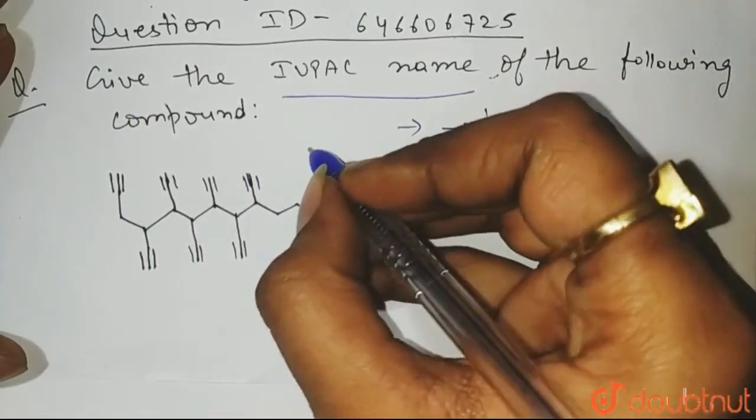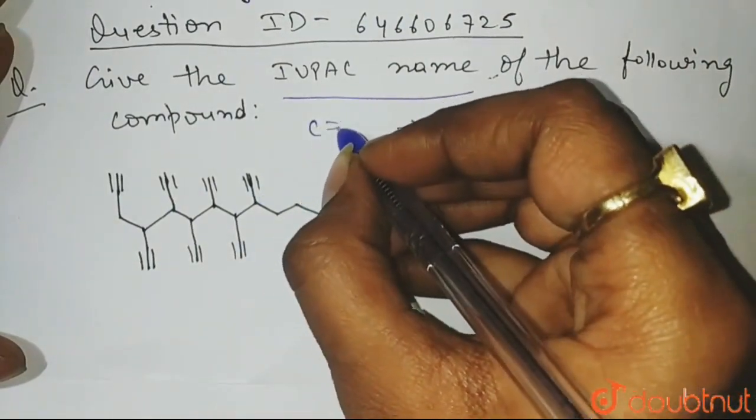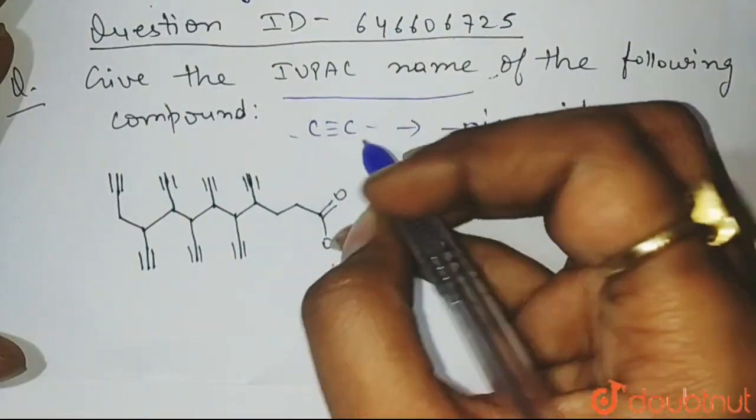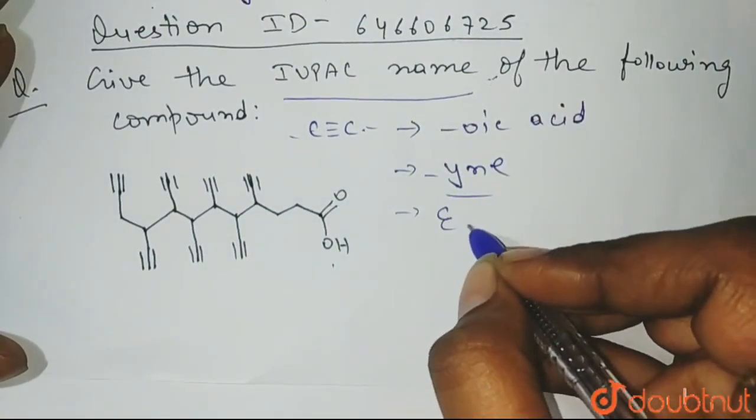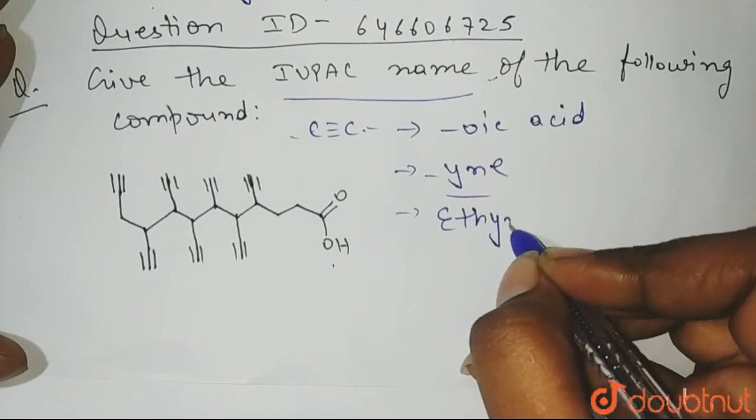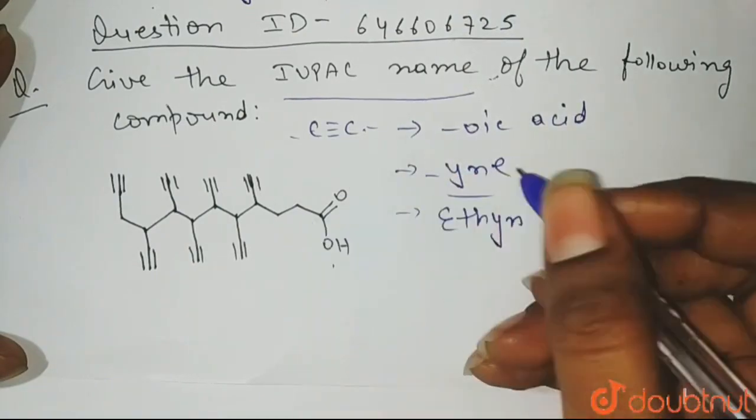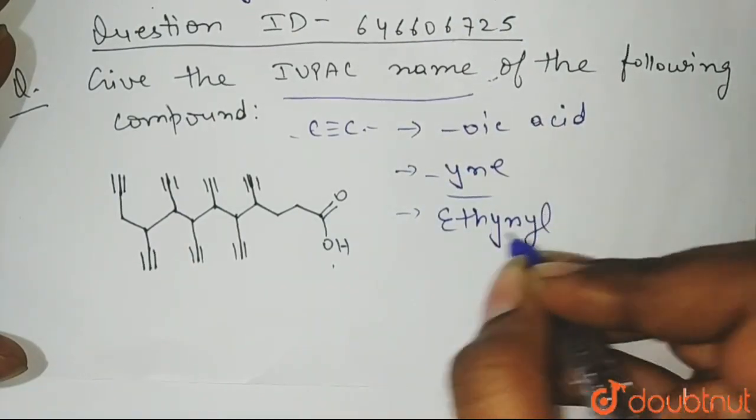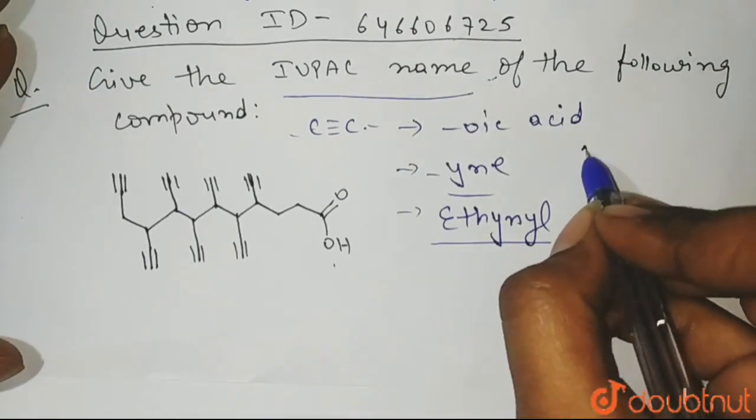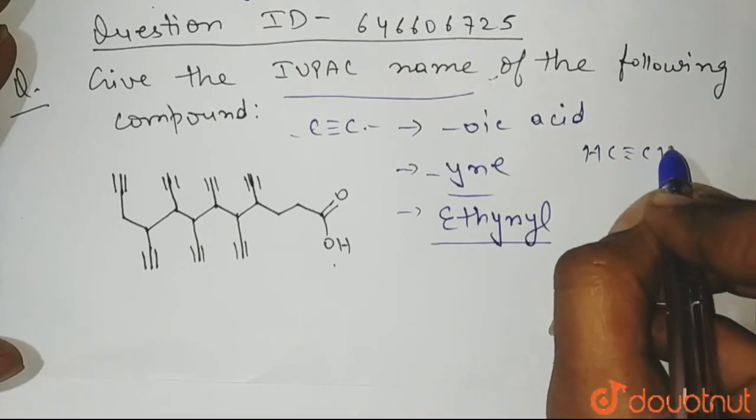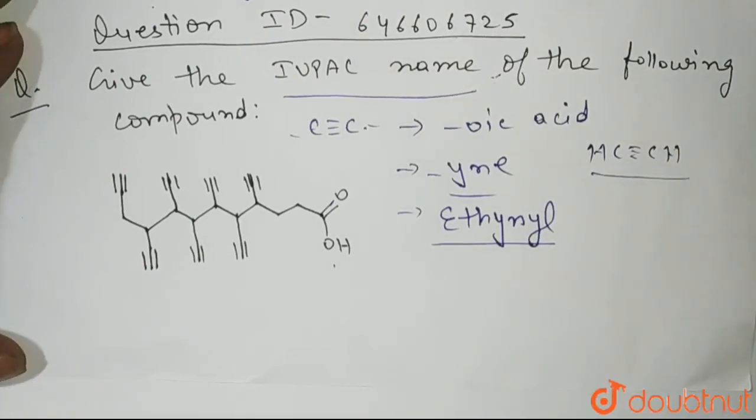Because if this, as you can see, this is present as a substituent, then because how many carbon atoms are there? One and two, two carbon atoms, so we will write ethyne, right? But if it is present as a substituent, you add yl. So it becomes ethynyl as a substituent. Otherwise, the name of this compound will be H C triple bond CH. It will be ethyne, okay?